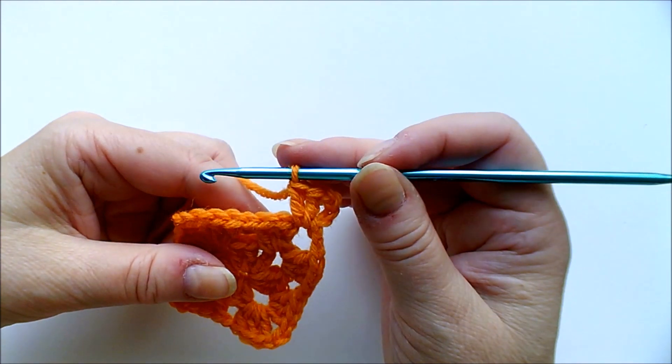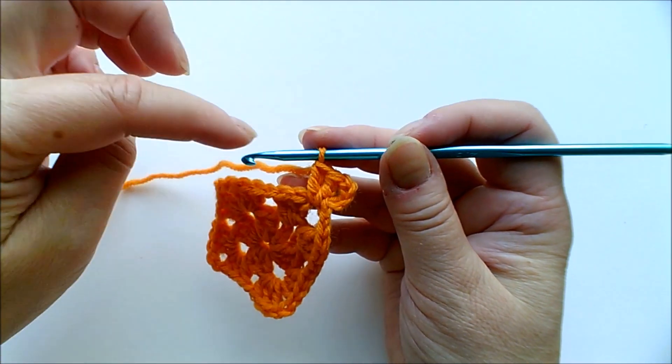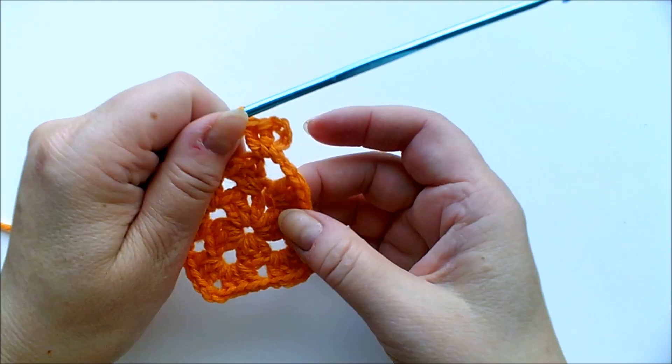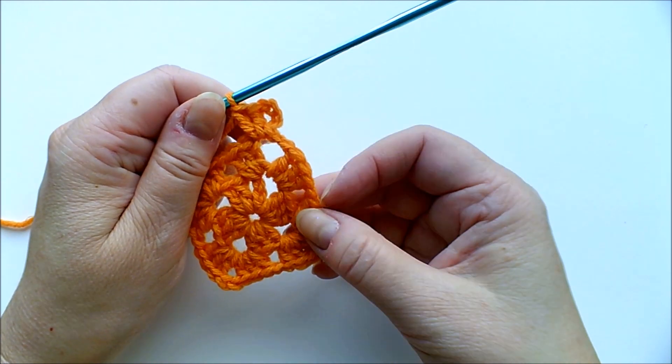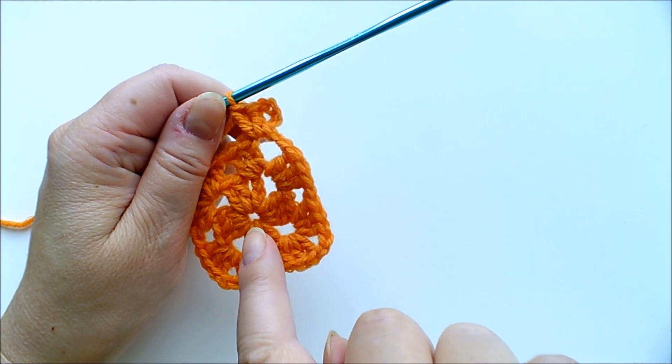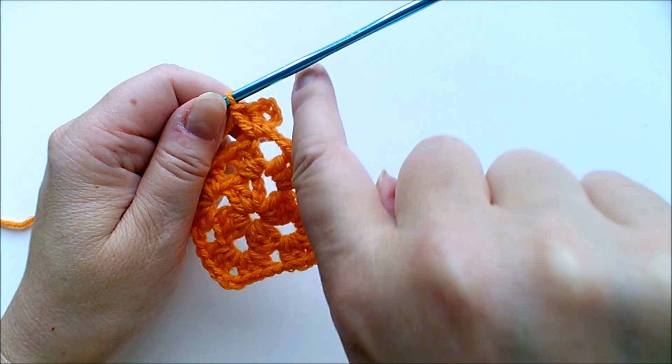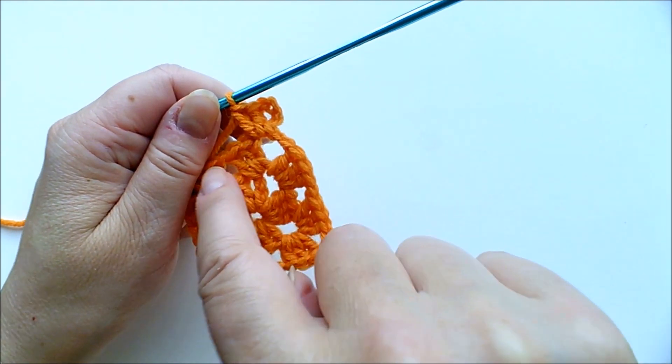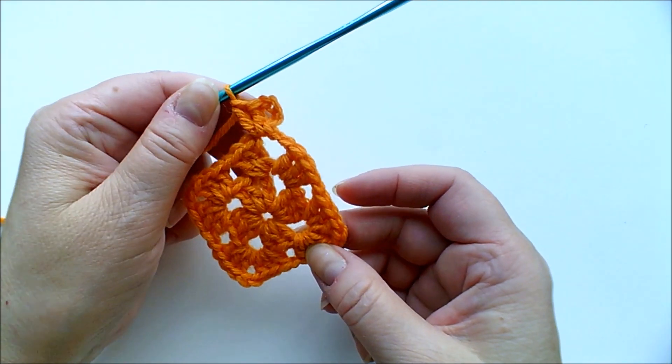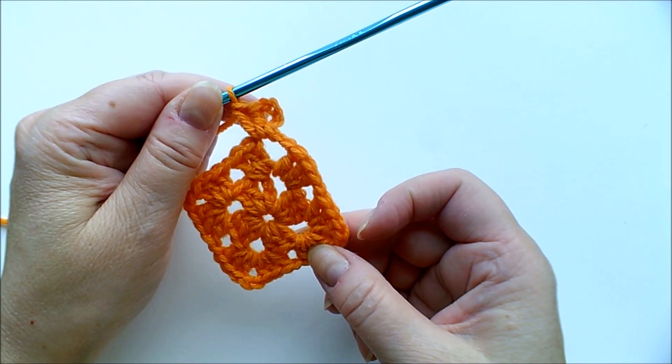And so on. And then you continue the granny square normally. And this way when you start the rows like this then also the spot where you start always stays in the same place instead of moving about. So this is how it goes.